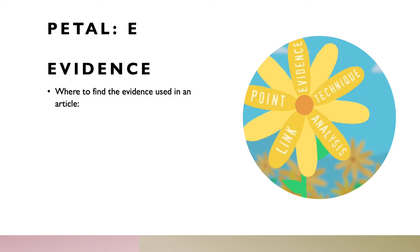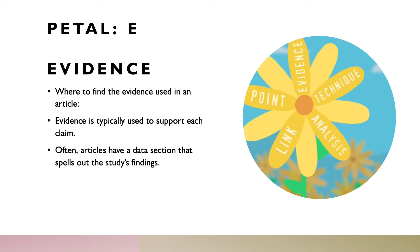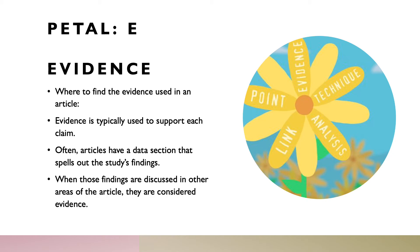Where do you find the Evidence used in an article? Evidence is typically used to support each claim, so if you've found all the claims, look around where those claims are to find the evidence. In some fields, articles will have a data section that spells out the study's findings, and those findings are typically used as evidence when discussed in the discussion or conclusion section.